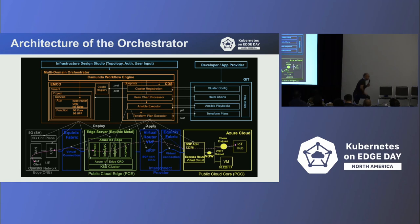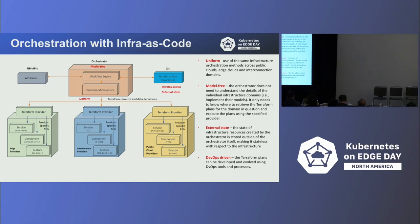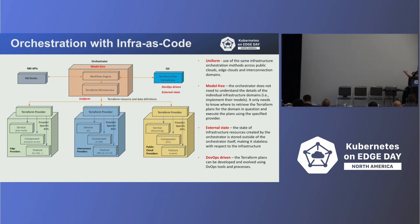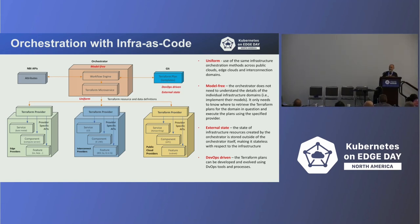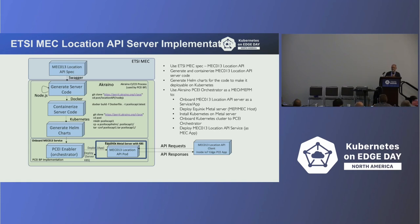The orchestration is agnostic of the domain. Different domains may need different tools: Helm charts for IoT Edge, location services, and 5G core; Ansible to deploy Kubernetes; and Terraform to bring up metal and fabric. We use different southbound technologies depending on what's needed. The cluster config, Helm charts, Ansible playbooks, and Terraform are all in Git — it's all a DevOps CI/CD flow. The orchestration uses infrastructure-as-code, so it's uniform and model-free; the orchestrator does not need to know the intricacies of the underlying domain. The MEC location API is implemented as a Kubernetes Helm chart and onboarded using the orchestrator.